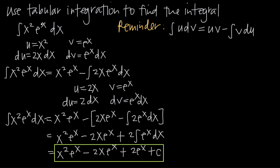We want to first identify u and dv inside our integral. In this case, we set u equal to x squared, which means dv has to be everything else: e to the x dx. Then we take the derivative of u to get du, so du equals 2x dx. And we take the integral of dv to get v, so the integral of e to the x dx is just e to the x.